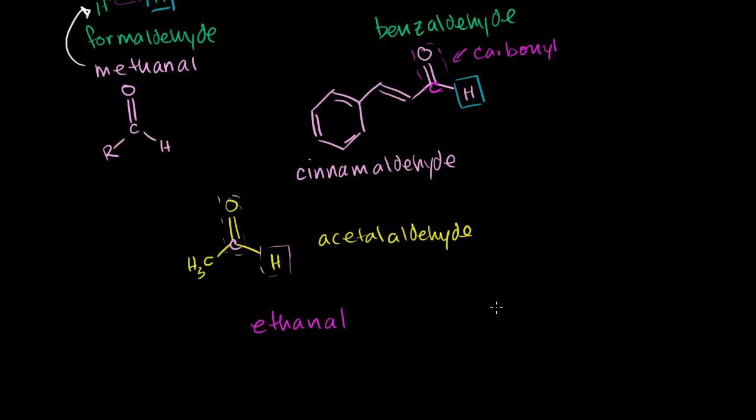So if we were to name, and in general, if you have a really long chain, the systematic names are what is used. So this thing right here, what would you call it? It's clearly an aldehyde. You have a carbonyl group, a hydrogen, and you have one, two, three carbons. So three carbons, the prefix is prop. So it's propanal. It's an aldehyde.